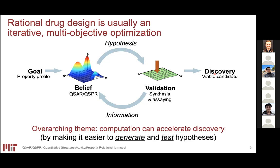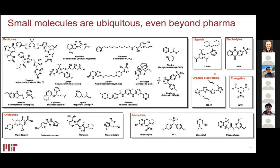Mapping back to drug discovery, that means developing tools to make it easier and more reliable to design and synthesize new molecules. Drug discovery is the main context, but small molecules are also used in agriculture, materials, and energetic compounds. For each application, we still follow that iterative discovery cycle, even if what defines a good molecule changes depending on the application.